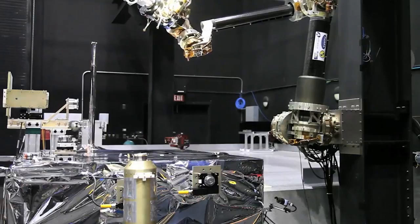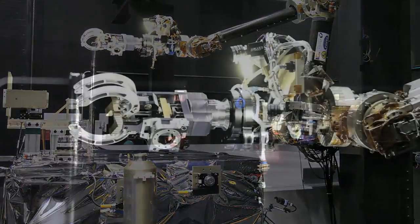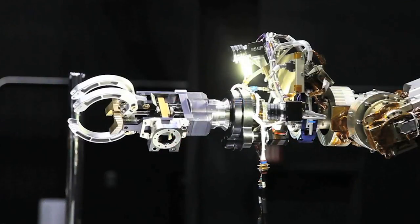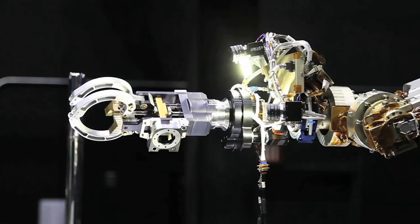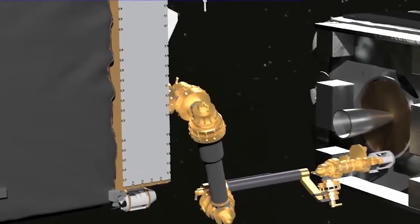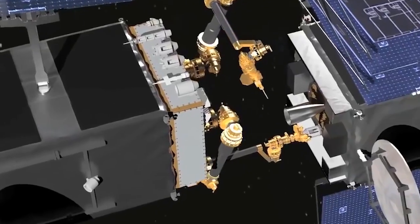The space robot will have two robotic arms and a toolkit of appendages the arms can swap in and out, much like a multi-bit screwdriver. One arm can grab onto the satellite, while the other performs delicate operations.